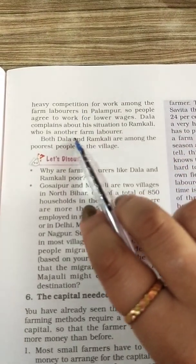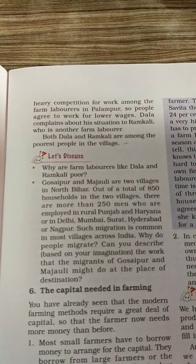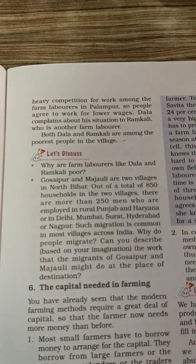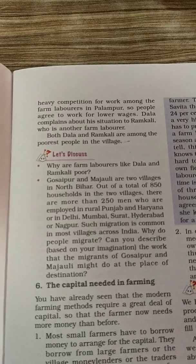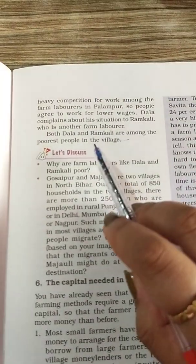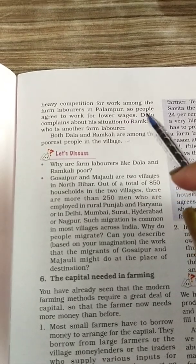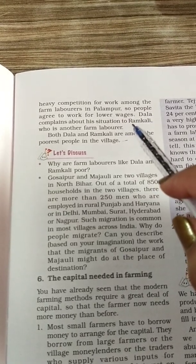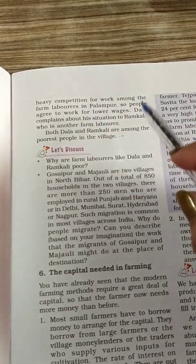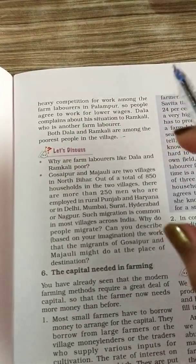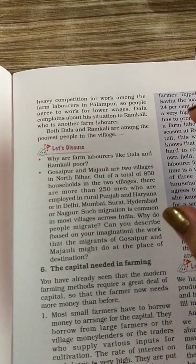Ramkali and Dala talk to each other about their wages. Ramkali says she is getting the same low salary as Dala. They both compromise and continue working in the same position because they have no other work available in village Palampur. This was the situation of laborers and how large farmers hired small and landless farm laborers for their land.